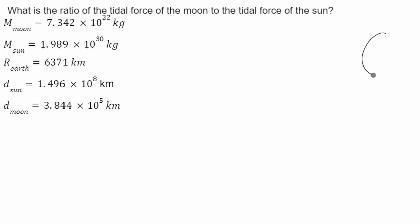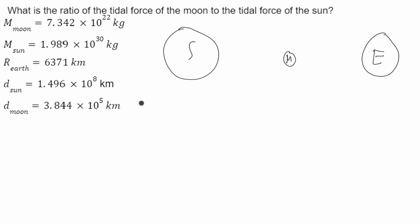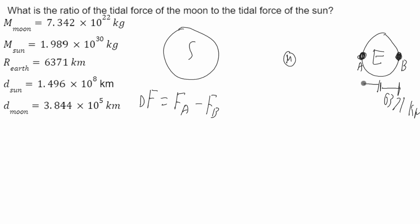I'll start by drawing a diagram. This will be Earth, I'll call it E. And this will be the moon, I'll call this M. And this will be the sun over here, I'll call this S. The tidal force is defined between two points A and B on Earth. It tells us that the radius of the Earth is 6,371 kilometers, so that radius applies on each side.